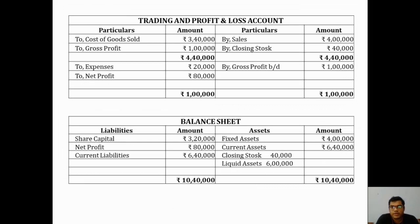In the trading account: cost of goods sold of 3,40,000 is on the debit side; sales of 4 lakhs and closing stock are on the credit side, giving gross profit of 1 lakh. This gross profit is brought down into the profit and loss account. Expenses of 20,000 are on the debit side, and the remaining net profit of 80,000 is also confirmed. This completes our trading and profit and loss account.